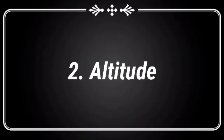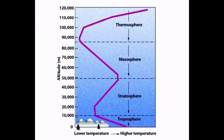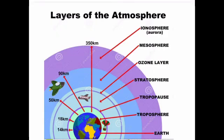Altitude. The temperature in the troposphere decreases at the rate of 1 degree Celsius per 165 meters of altitude. The temperature is relatively low at places located much above the sea level.